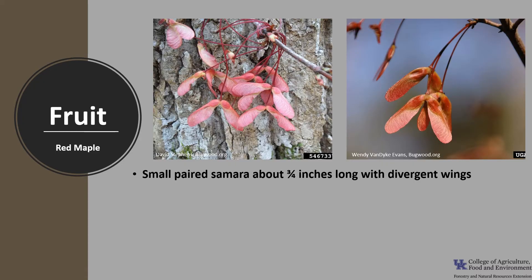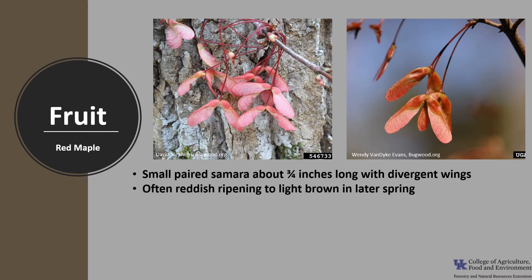The fruit is a small paired samara, which is a winged seed. Red maple has the smallest samaras of all native maples, only about three-fourths of an inch long. The samaras have slightly divergent wings and hang in clusters. They are often reddish and they ripen to a light brown in late spring, many times before the leaves have even completely developed.